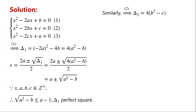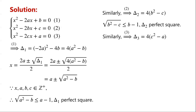Similarly, for equation 2, the discriminant Δ2 is equal to 4 times (b squared minus c). The square root of b squared minus c must be less than or equal to b minus 1, and the discriminant Δ2 must be a perfect square. For equation 3, the discriminant Δ3 is equal to 4 times (c squared minus a). The square root of c squared minus a must be less than or equal to c minus 1, and Δ3 must be a perfect square.